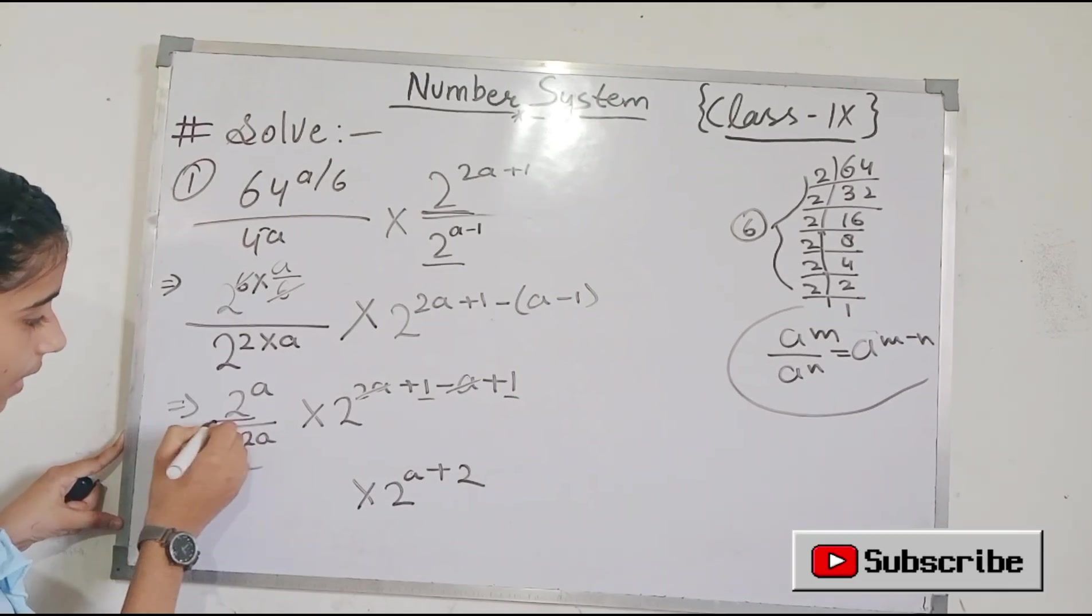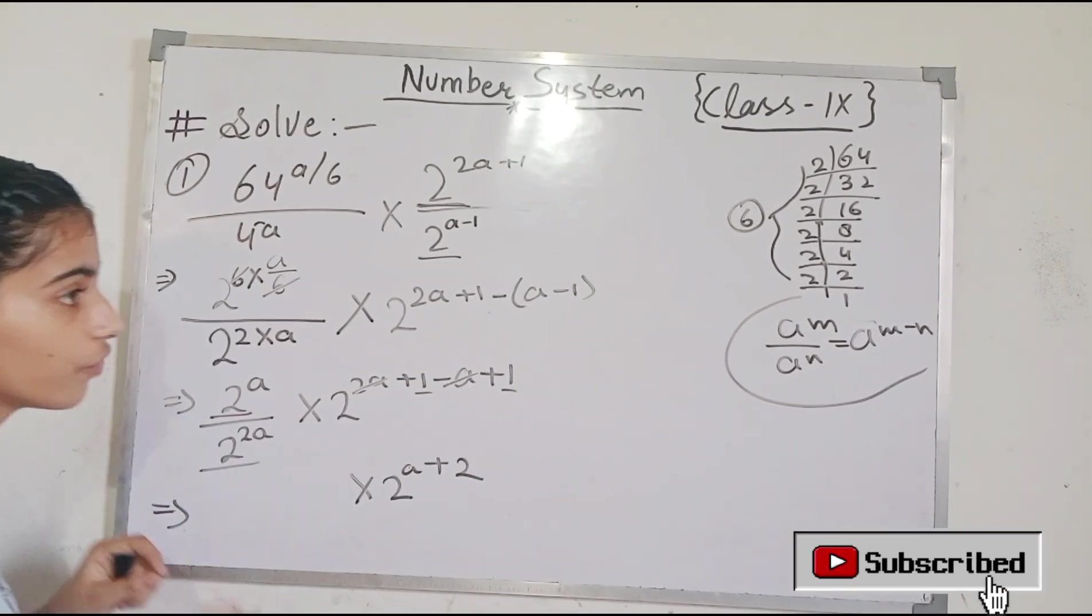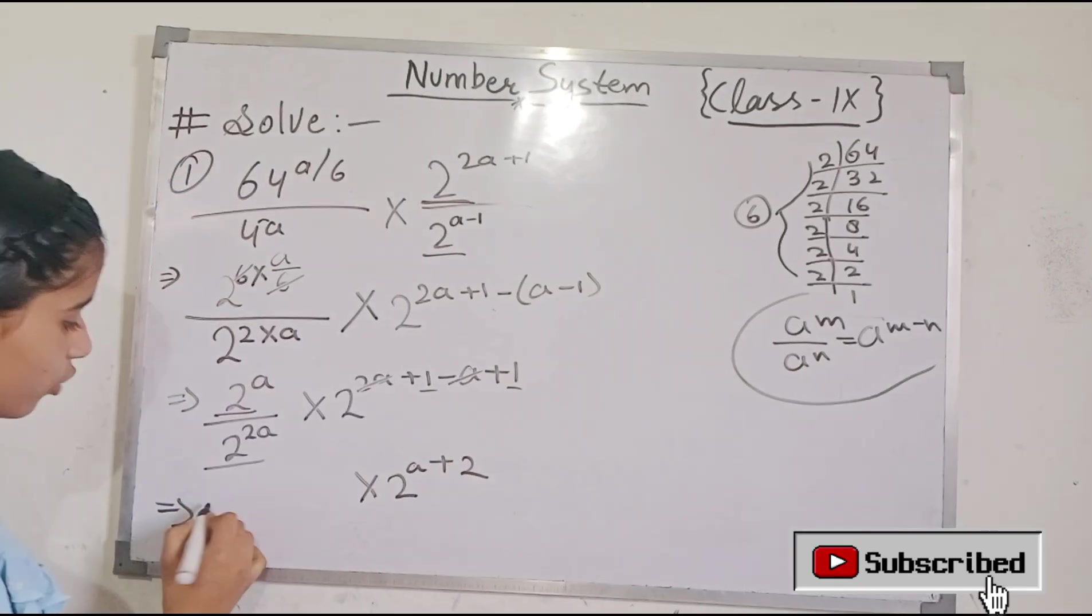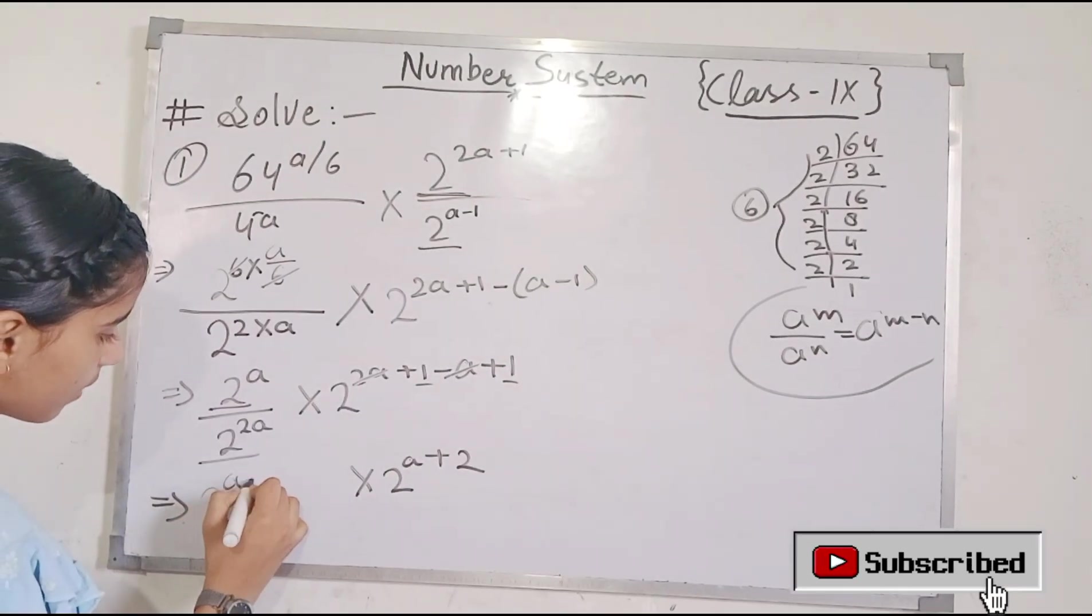Next, you can see here base is the same but we have different powers. So we have to apply the same identity here. We will use the same identity. So this will be a minus 2a.